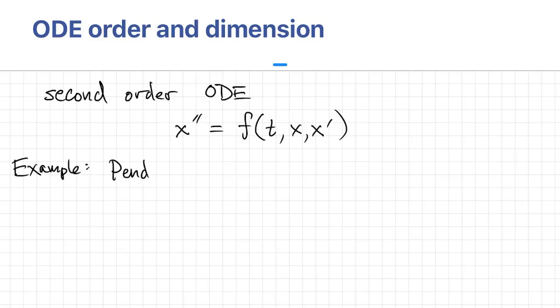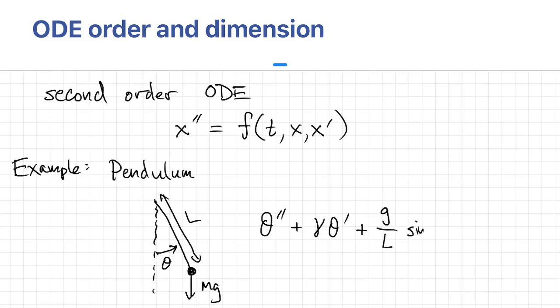A well-known example is the pendulum. So if we have a pendulum of length L, it makes an angle of theta with the vertical. And there's a mass M that exerts a weight at the end. Then we have theta double prime plus a friction coefficient gamma times theta prime plus g over L times sine theta equals zero.